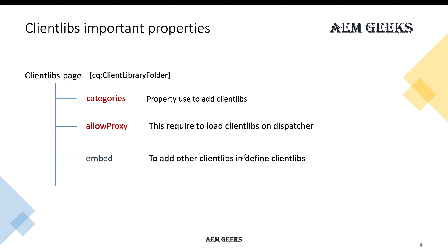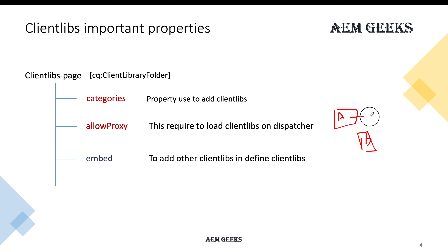The 'embed' property is used when you want to include some other client library inside your client library — essentially merging the code of two client libraries. For example, suppose you have client library A and client library B. To merge the code of A into B, you use the embed property inside the B client library.